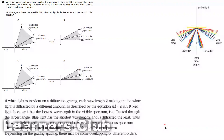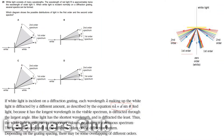The formula for diffraction grating is N lambda equals D sin theta. N is the number of order — that's the first order and second order in this case. Theta is the angle between the spectra and the zero order. D is the diffraction grating separation. Lambda is the wavelength.